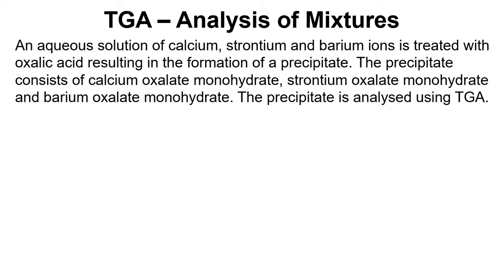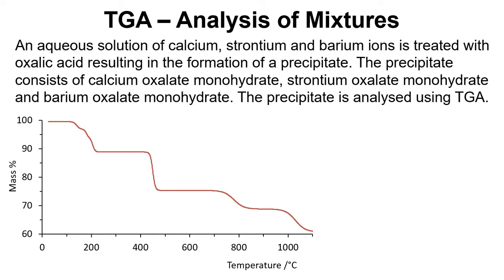The precipitate consists of calcium oxalate monohydrate, strontium oxalate monohydrate and barium oxalate monohydrate. And then the precipitate is analyzed using TGA and we've got the TGA trace shown here.